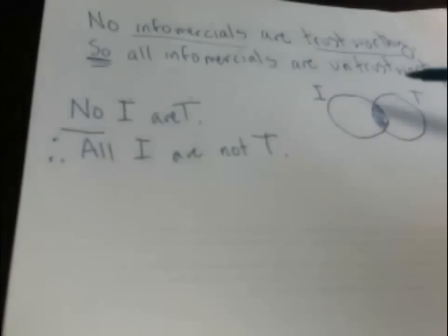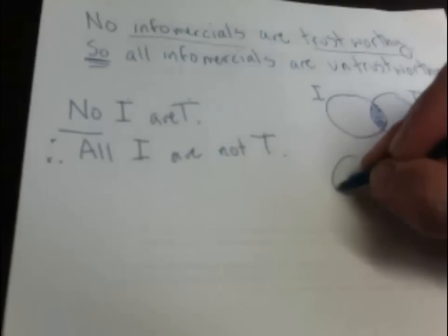Now, the method of checking for validity is to represent the premises and then look to see if the conclusion is contained. While we're learning how to do this, we'll represent the conclusion on a separate diagram. Don't represent the conclusion on this diagram, because then if you look for it, you will find it there. We'll represent it on a separate diagram.